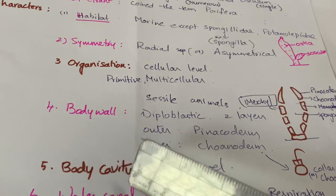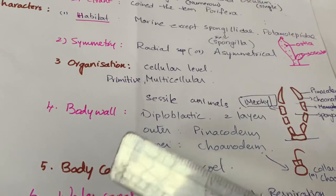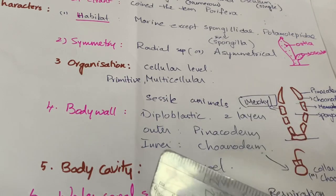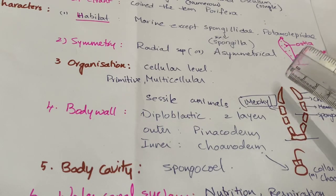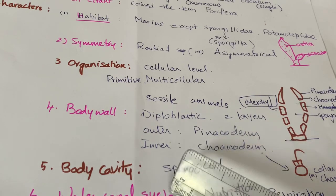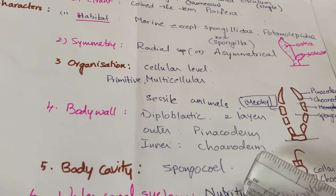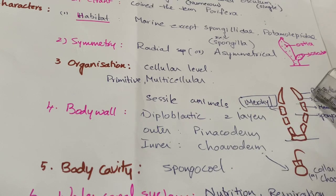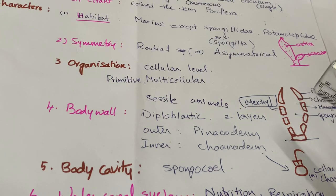The special character of Porifera is the water canal system, or water transport system. This system includes ostia, canals, the spongocoel, and the osculum — all constituting the water transport or canal system. This system is useful for nutrition, respiration, and excretion. As water enters through the ostia, food materials also enter and amoebocytes present in the mesohyl region capture the food particles.